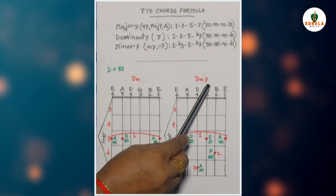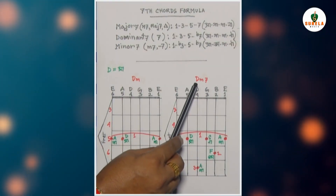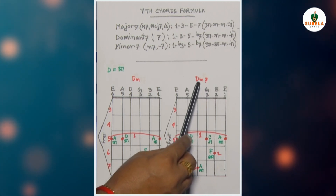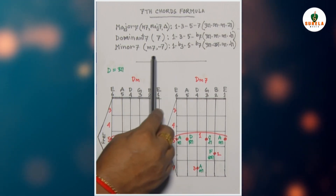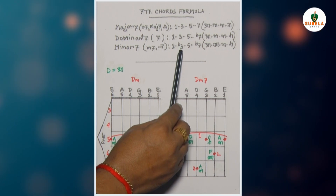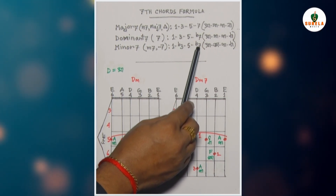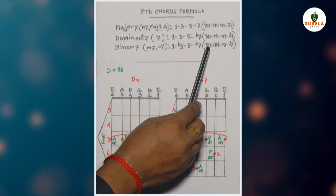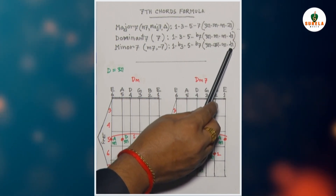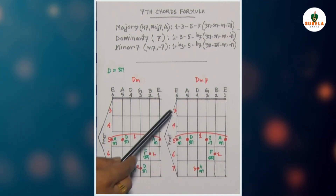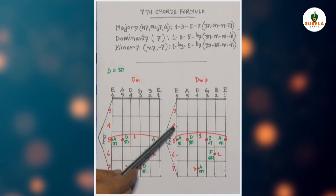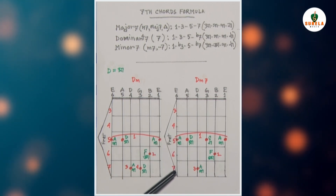D minor 7th chord — কীভাবে ধরতে হচ্ছে, এটা দেখাচ্ছি। D minor 7th-এর formula হচ্ছে 1, flat 3, 5, flat 7। সা, কমোলগা, পা, কমোলনি। Fret count হচ্ছে 3, 4, 5, 6, 7।